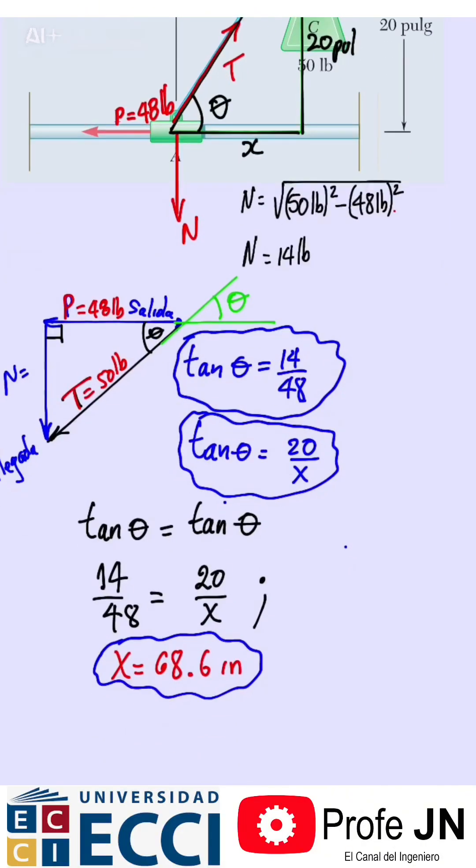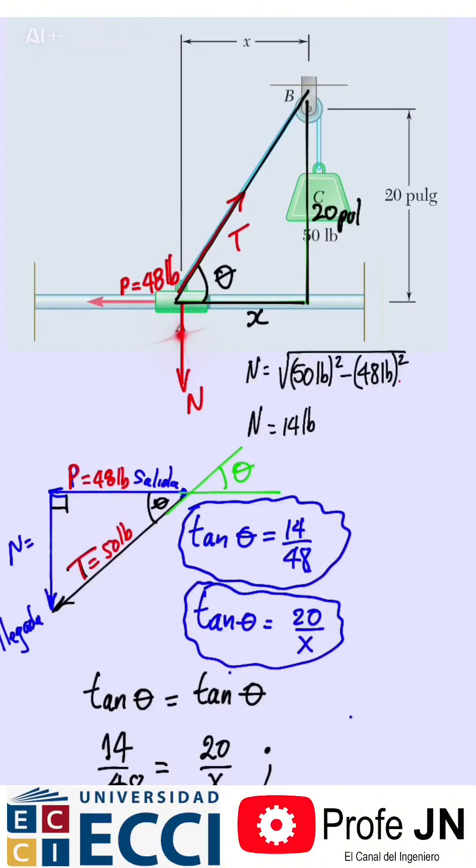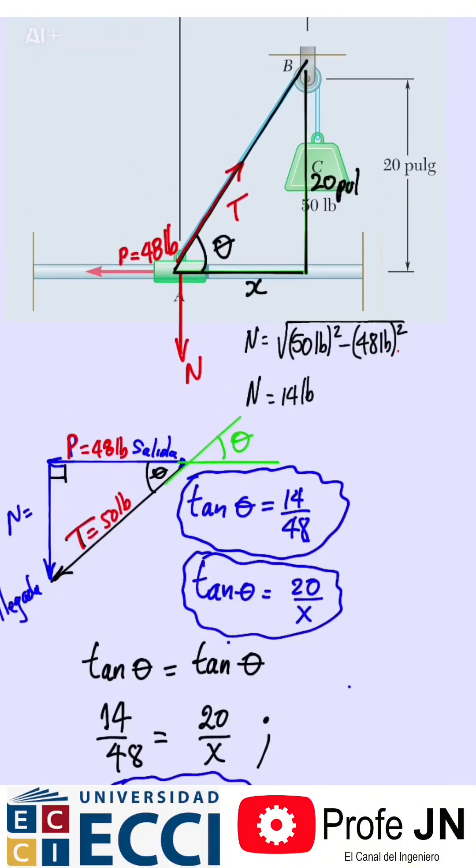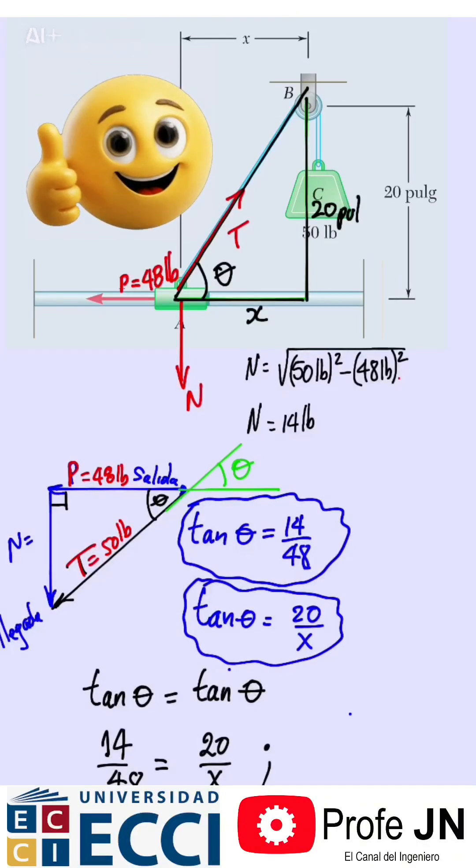So the horizontal distance between the collar and the weight must be 68.6 inches for this to be in equilibrium. Now I invite you to visit my channel to enjoy this course on statics, a course on strength of materials, structural analysis, machine design, and many more courses. I'll be waiting for you.